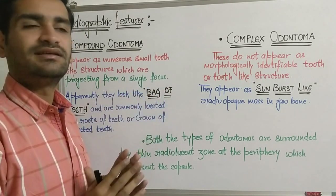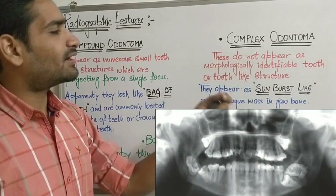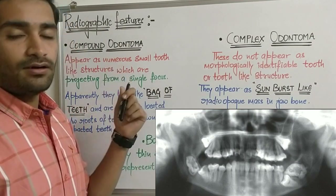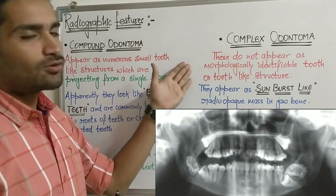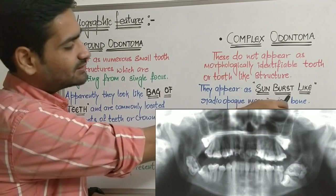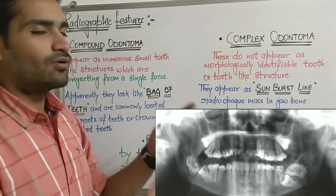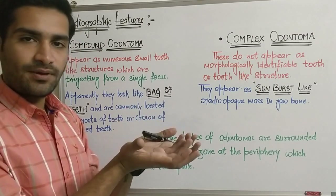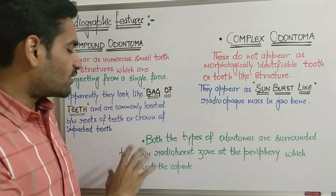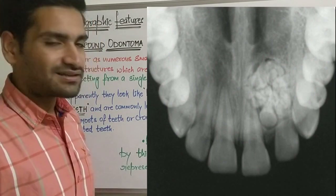For complex odontoma, these do not appear as morphologically identifiable tooth-like structures — as already discussed, complex odontoma does not produce any structure that morphologically resembles a tooth. They appear as a sunburst-like radiographic mass. Both types of odontomas — compound and complex — are surrounded by a thin radiolucent zone at the periphery, which represents the capsule of the lesion.